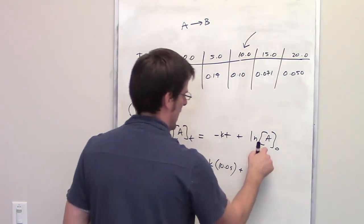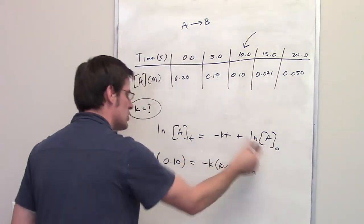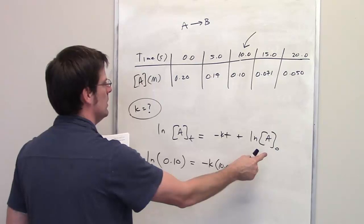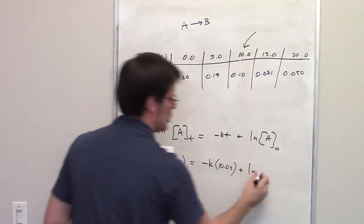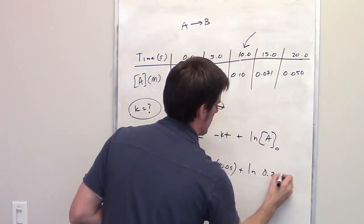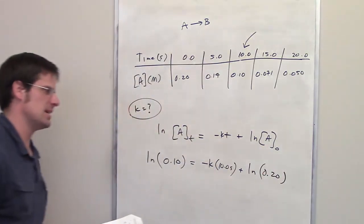Now, what does ln of A sub 0 mean? Well, A sub 0 is the concentration of A at time 0. What is the concentration of A at time 0? It's 0.2. So I'm going to go ahead and write down 0.20. Does that make sense?